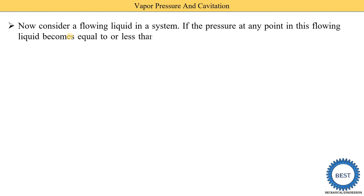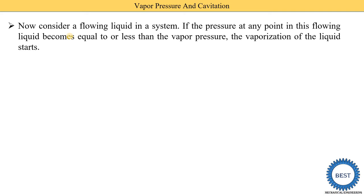Now consider a flowing liquid in a system. Unlike the earlier closed-vessel example, here we consider liquid flowing in a pipe. If the pressure at any point in this flowing liquid becomes equal to or less than the vapor pressure, vaporization of the liquid starts. In a certain portion of the pipe where pressure is reduced, vapor bubbles are created in that low-pressure region.